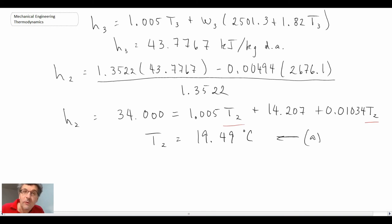Now they also want us to get the relative humidity at this temperature, so let's solve for the relative humidity. We go to our steam tables for this temperature of 19.5 degrees C. The specific humidity at 2 is the same as specific humidity at 1.